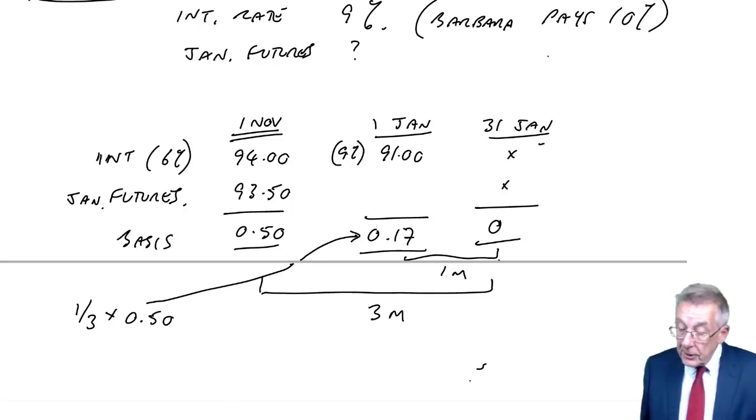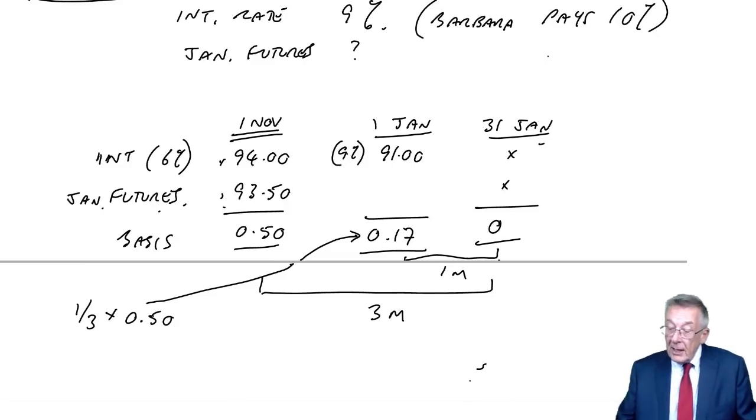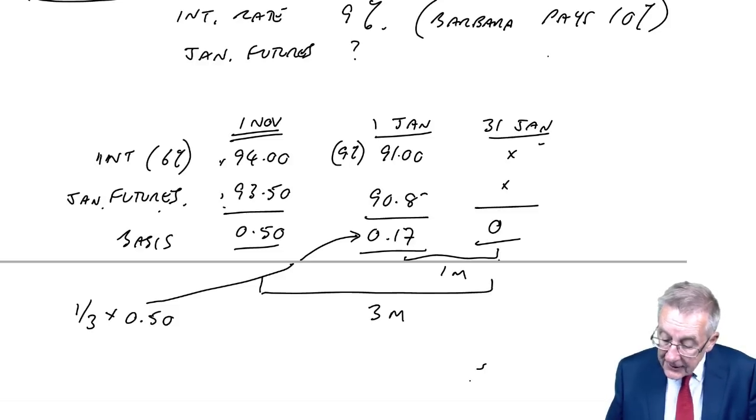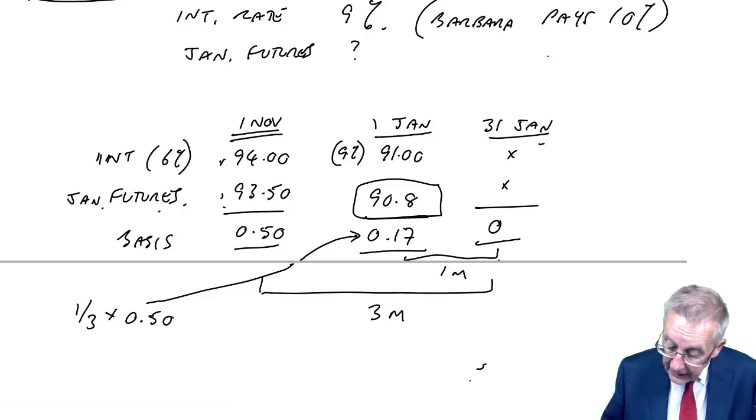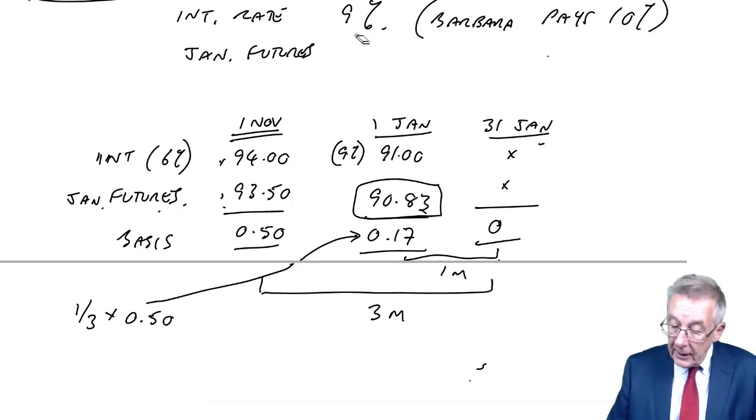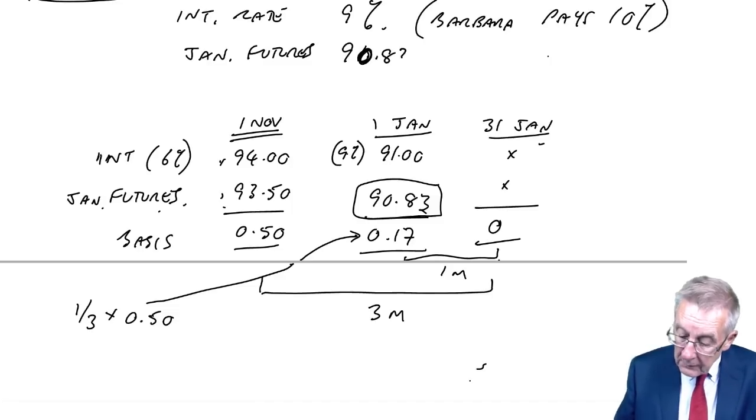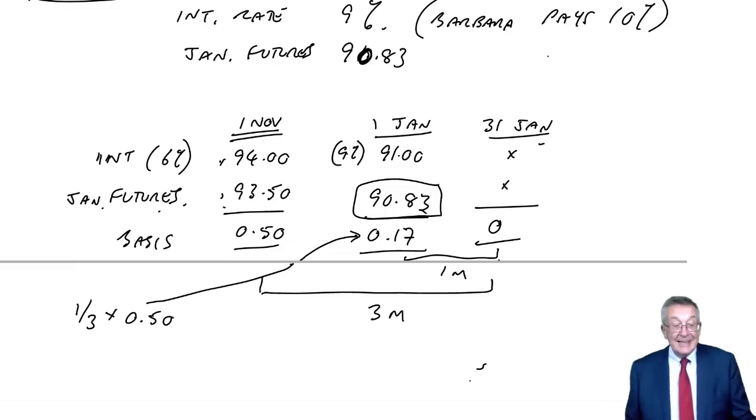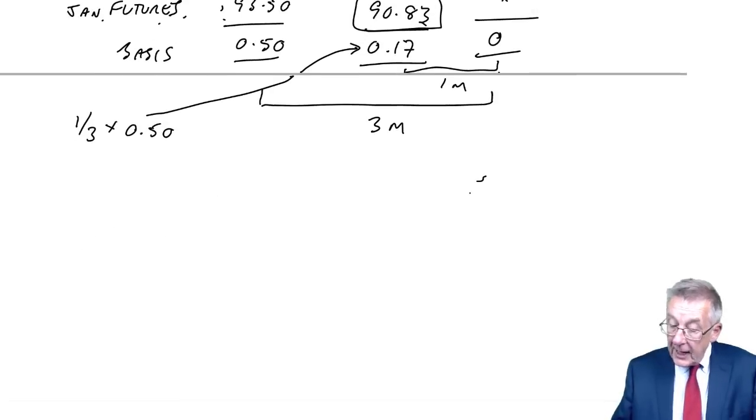As a result, what's our estimate of the January futures price on the 1st of January? The difference from 91 is 0.17, and the futures price at the moment is lower than the equivalent interest. It always will be lower. If it's higher, it always will be higher. So what does it come to? It comes to 91 minus 0.17, which is 90.83. So we now know the interest rate, we know the futures price. Now we can show what happens on the 1st of January.